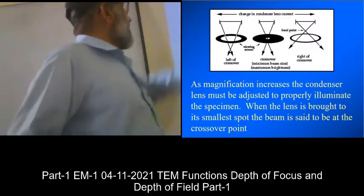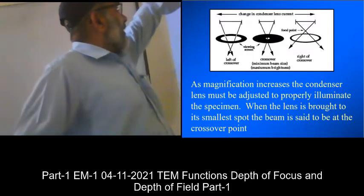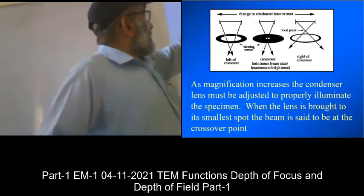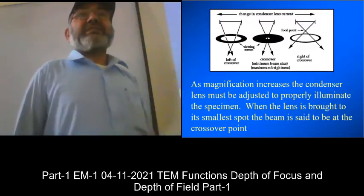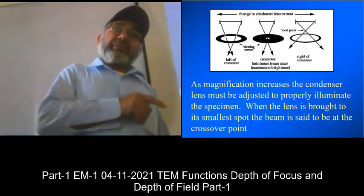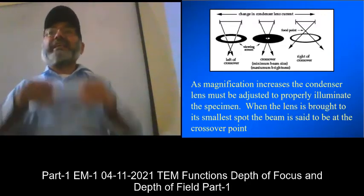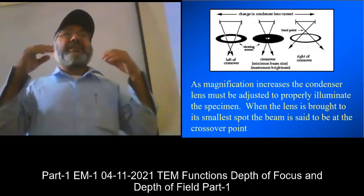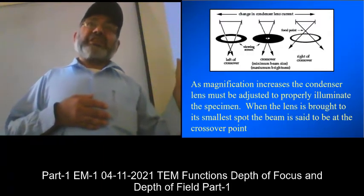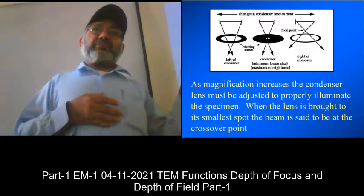If you look into this slide, you will see the left of the crossover and that yellow one is the right of the crossover. And that one is in the middle of the crossover. When you have minimum beam size and maximum brightness. Brightness is associated with the intensity of the beam. If the brightness is more than required, then it confuses the image. It gives you a blurred image.